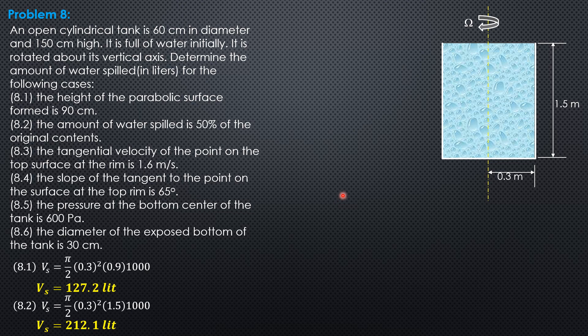For third, the tangential velocity of the point on the top surface at the rim is 1.6. So height is tangential velocity squared over 2g. That's the direct formula. So 1.6 squared over 19.62 is 0.1305. So substitute again. Volume spilled pi over 2 times 0.3 squared times 0.1305 times 1,000. So volume spilled is equal to 18.45 liters.